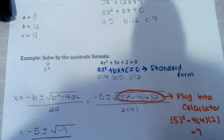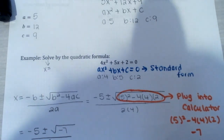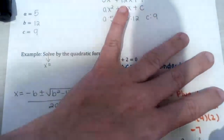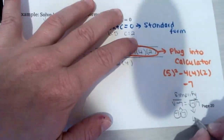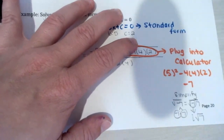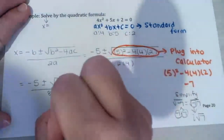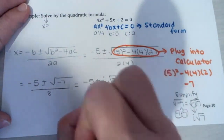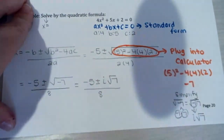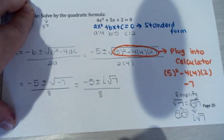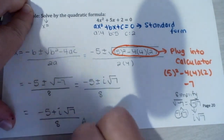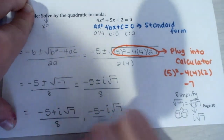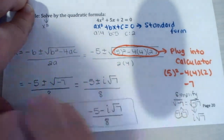So we get negative 5 plus or minus the square root of negative 7, all over 8. To simplify the square root of negative 7: negative 7 is negative 1 times positive 7. The square root of negative 1 comes out as i, and that lonely 7 stays underneath the square root. So the answer is: negative 5 plus i square root of 7 all over 8, comma, negative 5 minus i square root of 7 all over 8.